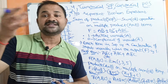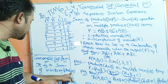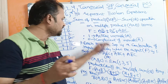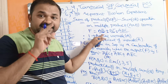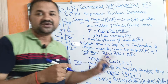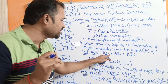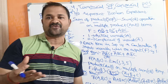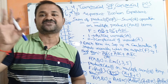Now let us see about Canonical SOP, also called Standard Sum of Products. It is a sum of minterms where each product term includes all the input variables. For example, Ā·B·C̄ + Ā·B·C + A·B̄·C is in canonical SOP form because each term contains all three input variables A, B, C.